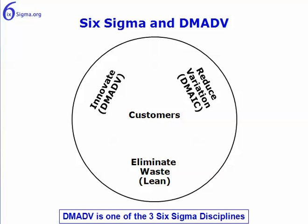You've now seen how the DMADV is one of the three Six Sigma dot org disciplines in an integrated methodology that we call our Lean Six Sigma methodology, the other two being Lean, or waste reduction, and DMAIC, or variation reduction.